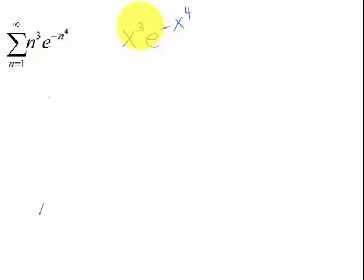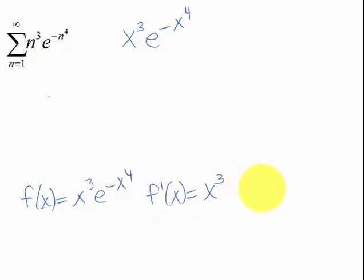Now that one I can see because I know that exponentials dominate over polynomials and this e to the negative stuff is going to zero, but let's go ahead and confirm that by looking at the first derivative. So I'm going to do that down here. If I have f of x equals x cubed e to the negative x to the fourth, and I took the first derivative, I have a product rule. So I have first times the derivative of the second.